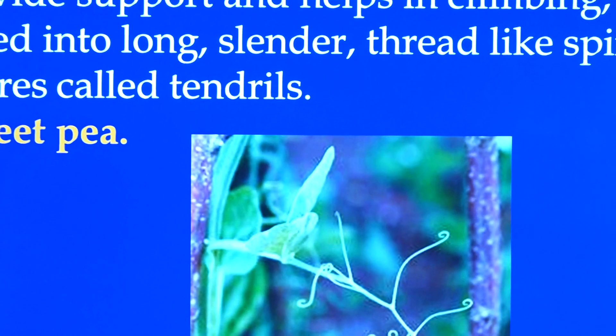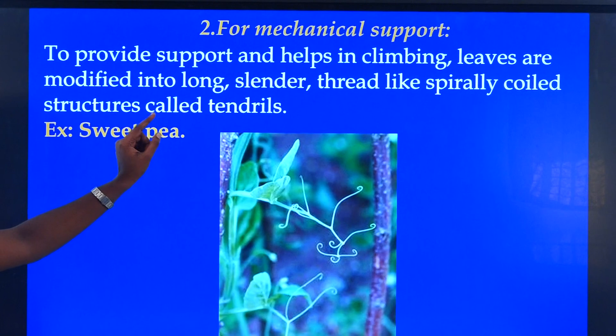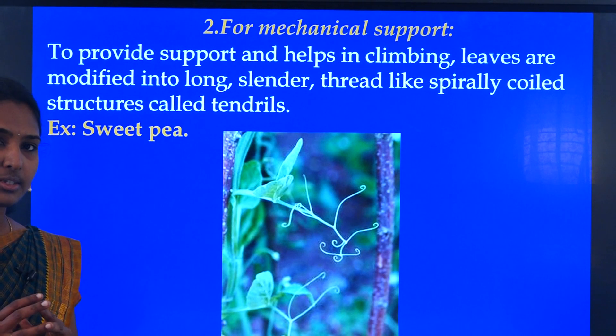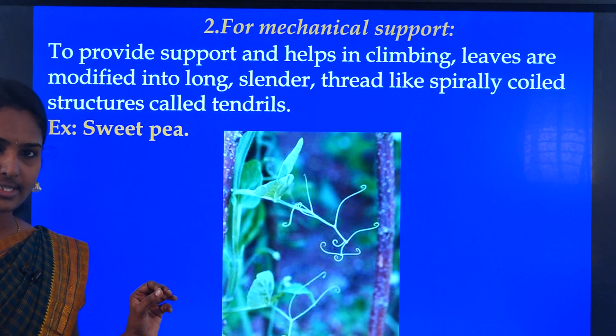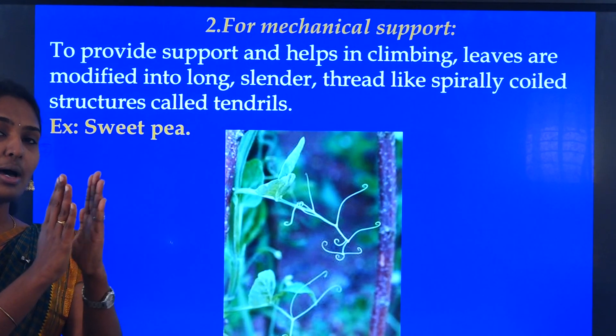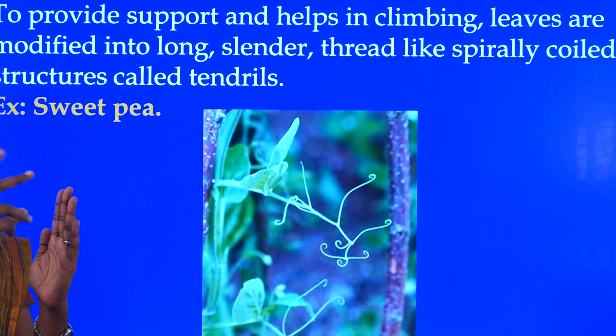Moving on to the next modification — that is for mechanical support. To provide support and help in climbing, leaves are modified into long slender thread-like spirally coiled structures called tendrils. When we observe a climbing plant, we can see spiral structures. These tendrils help for mechanical support.